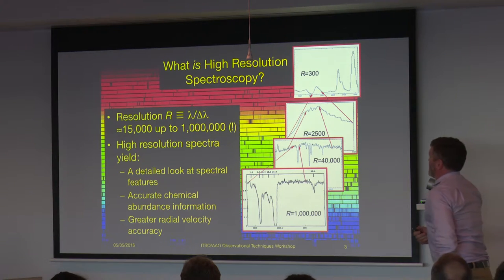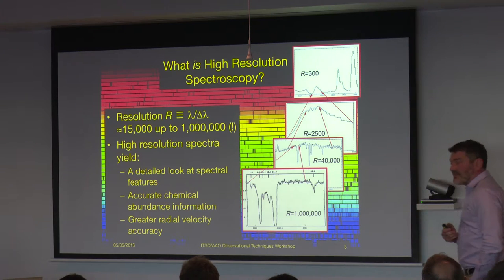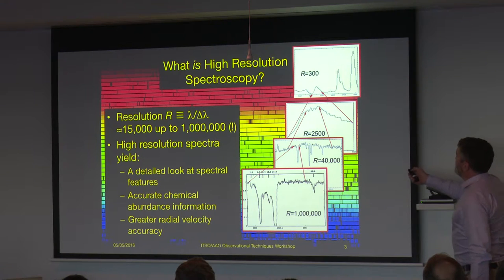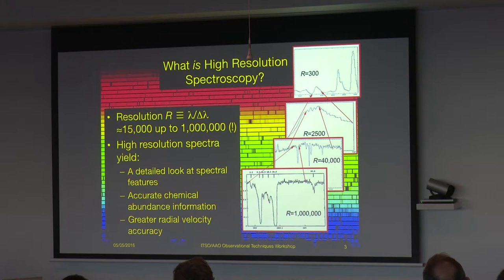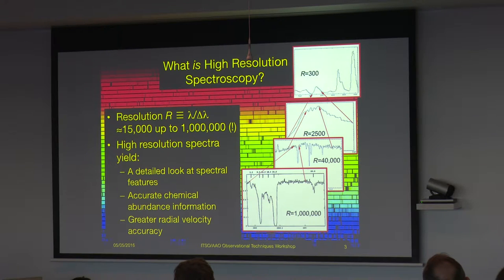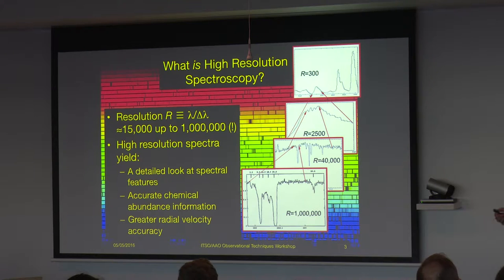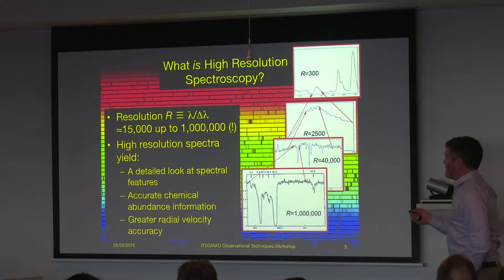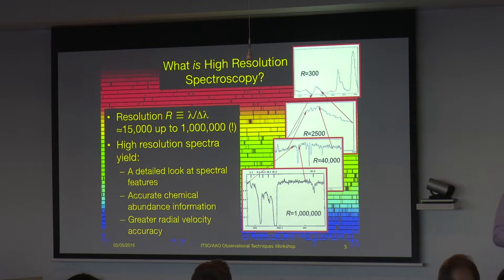So what is high resolution spectroscopy? Well, at the simplest level, it is getting spectra at higher resolution. And what do I mean by high resolution? Here's a spectrum of a star at a resolution of 300, so it's fairly low. Resolution is defined as lambda divided by delta lambda. Here you see a spectrum of a star at a resolution of 300 - that's generally considered low resolution spectroscopy. If we zoom in and show a sample at a resolution of 2500 - again, lambda divided by delta lambda - you see there's actually some detail in there. Still, for most people, 2500 is pretty much low resolution spectroscopy.